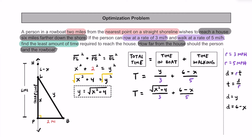So we finally have an equation and we can go ahead and optimize time. To do that, we're going to differentiate — take the derivative of the right side of this equation. The right side is a little messy, so let's rewrite it. The time is equal to one third multiplied by the quantity X squared plus four raised to the one half power, plus one fifth multiplied by the quantity six minus X. That's a little bit easier to take the derivative of.